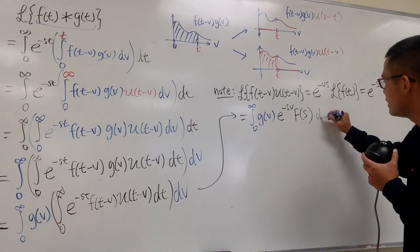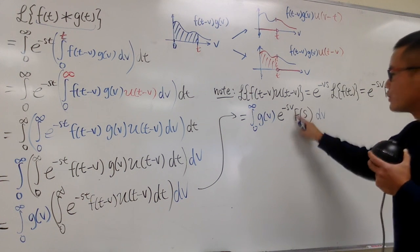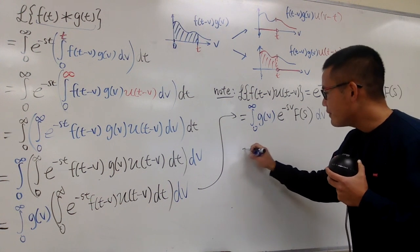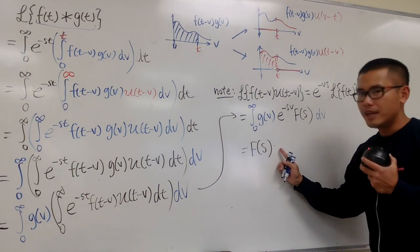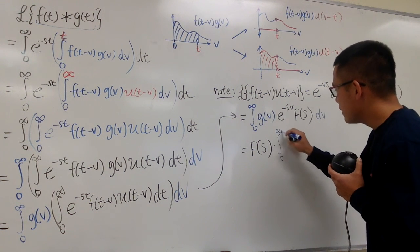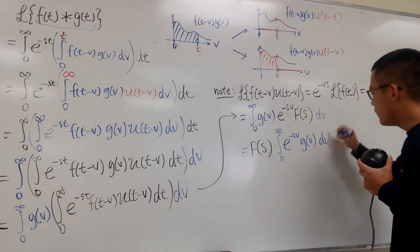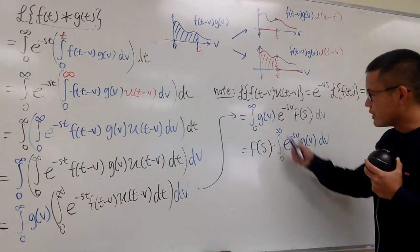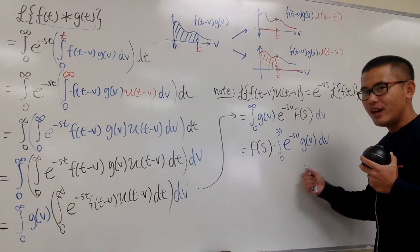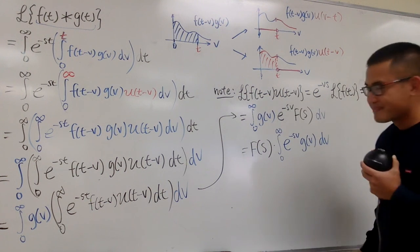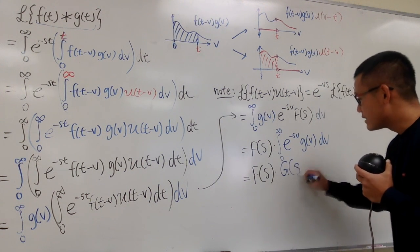Now we're back in the phi (v) world. F of s is just a constant in that world, so we bring it to the front. We have F of s multiplying the blue integral from 0 to infinity of e to the negative sv times g of v dv. The variables phi, phi, phi all match — this integral is exactly the definition of the Laplace transform of g of t, which is capital G of s. So the result is simply F of s times G of s.